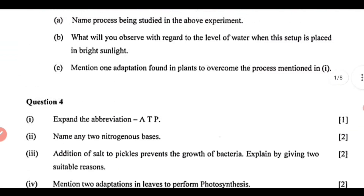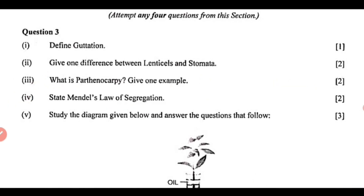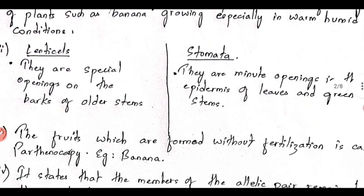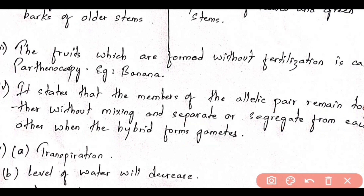Next is question number 3: what is parthenocarpy? It is the production of fruits without fertilization, and one example you can write is banana. Moving ahead to question number 4: state Mendel's law of segregation. It states that the members of the allelic pair remain together without mixing and separate or segregate from each other when the hybrid forms gametes. This is also called the law of purity of gametes — Mendel's second law, that is, the law of segregation.